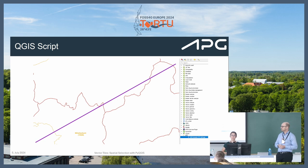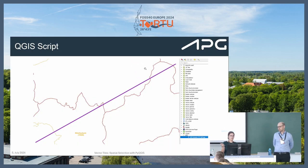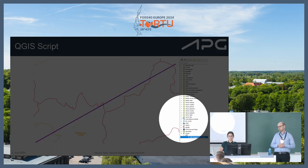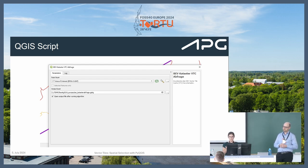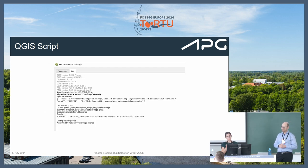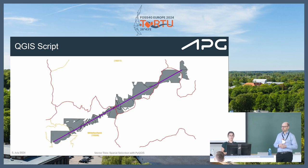Our solution was to create a QGIS script because we have many users who should easily be able to use it. They can have their area of interest — like 50 kilometers with a buffer of 10 or 20 meters — then select our script, specify the area of interest, tell it where to save the data. The vector tile cache service to use is already in the script — in this case, the BEV, the Federal Office of Metrology and Surveying. It runs and finishes in seconds for a typical area.